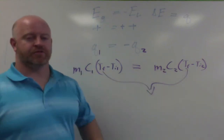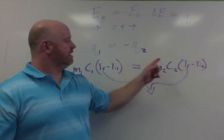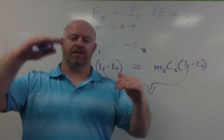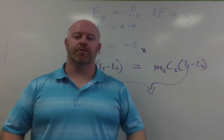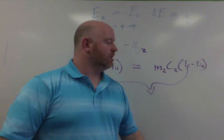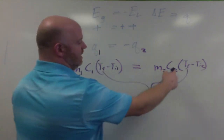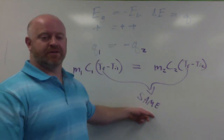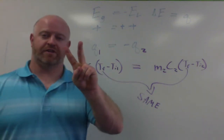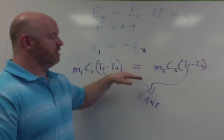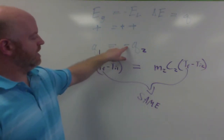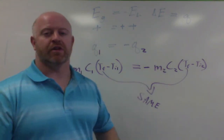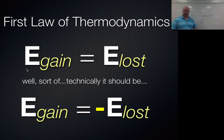Notice I did not put a subscript one or two on temperature final — there's a reason for that. When these two substances come to equal energy exchange they reach thermal equilibrium, per the second law of thermodynamics. At thermal equilibrium, temperature final is always the same for both substances, so there's only one T_final in this equation. Don't forget to bring the negative sign down on one side.